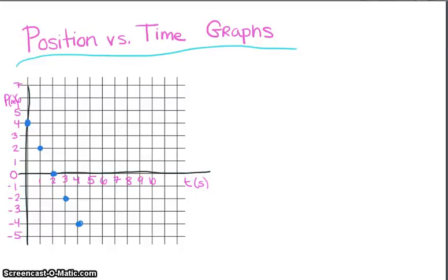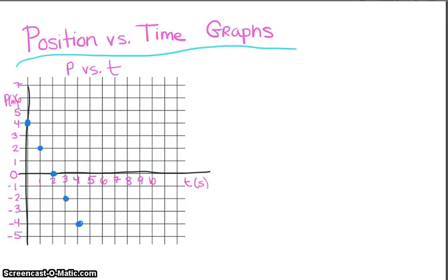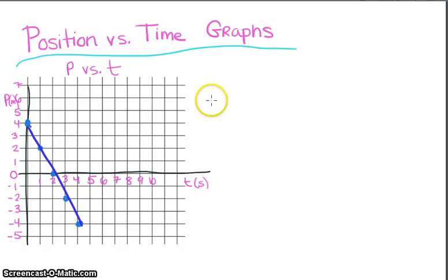Today we're talking about some big ideas related to position-time graphs. Here's an example of some data collected similar to what we did in class, where the independent variable on the x-axis is time and the dependent variable is position. I've plotted the points from the lab, and we want to do a line of best fit. We can see that our line of best fit looks to be a linear relationship.